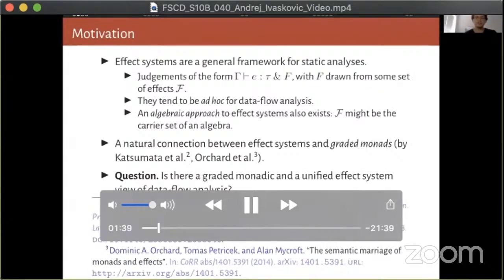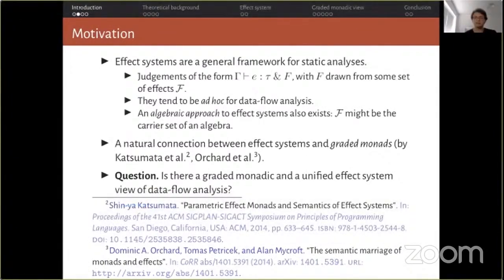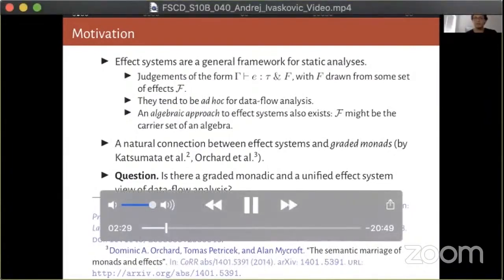It has been known for a long time that many data flow analyses possess similarities that point to a deep connection between them. They can all be seen as instances of one general analysis with the same underlying efficient work list algorithms that can be performed by a compiler. One such generalization is that of monotone data flow frameworks by Kamm and Ullman. On the other hand, effect systems have been a general program analysis framework, mainly modeling side effects such as memory accesses and exceptions.